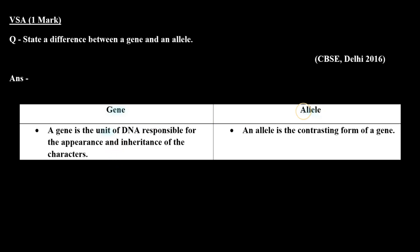Aur jo allele hota hai, allele ek hi gene ki different forms ko bolte hain. So in English: a gene is the unit of DNA responsible for the appearance and inheritance of the characters, and an allele is the contrasting form of a gene.